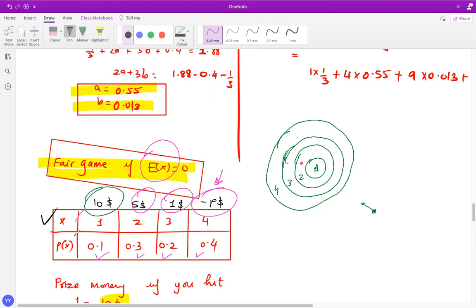So I'm going to do 10 times 0.1, five times 0.3, one times 0.2, and negative P times 0.4. And you add them up. So that's your 10 times 0.1, plus five times 0.3, plus one times 0.2, and minus P times 0.4. And if this answer comes to zero, then it means that my expected earning is zero. That means the game is fair.